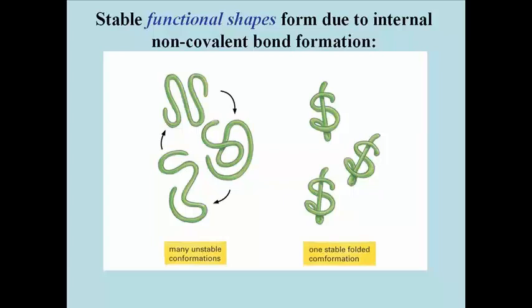The cartoon here illustrates the concept of one more stable shape or set of non-covalent interactions accumulating in a cell or in a test tube, among many less stable ones that fold or unfold due to thermal motion. The more stable molecular interactions are the specific ones. It's the specific interactions that lead to appropriate or correct biological function.